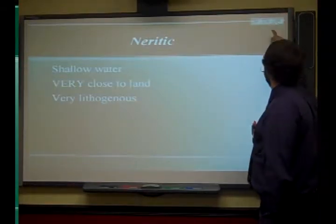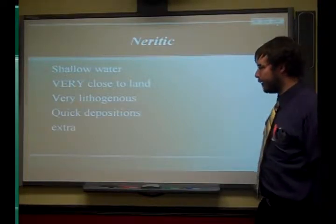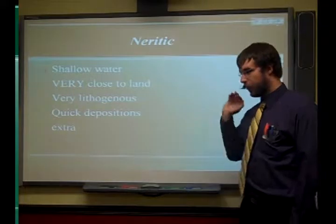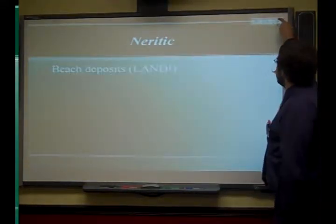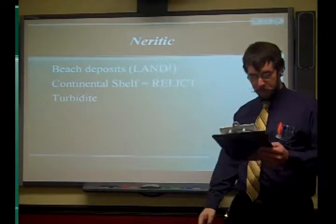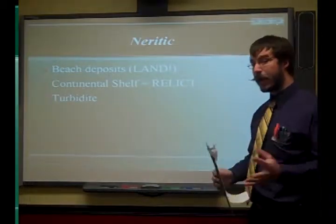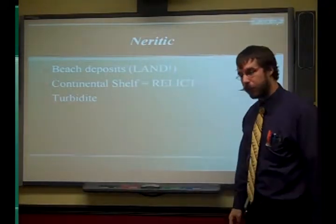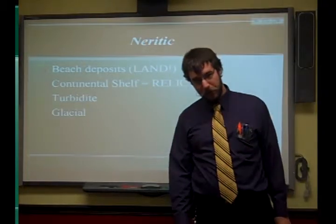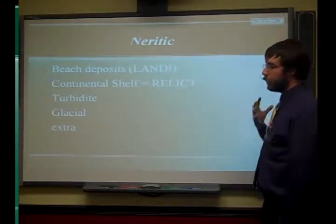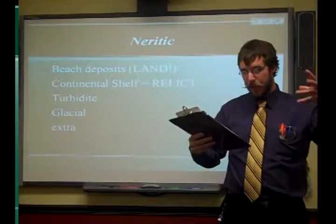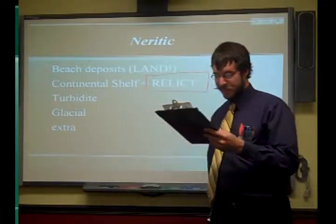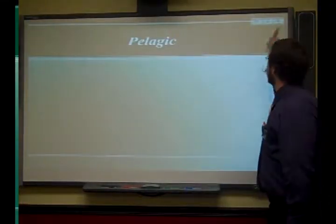In neritic sediments, the water is shallow, the water is warmer, and you're more likely to find lithogenous sediments — things deposited very quickly. Larger pieces are more likely to be found in your neritic zone. You tend to find beach deposits and anything up on the land. Things found in the continental shelf are called relict sediments — think relics of the past. You also find turbidite deposits, glacial sediments, and the relic deposits are in the ballpark of three to seven thousand years old.